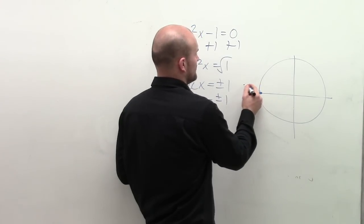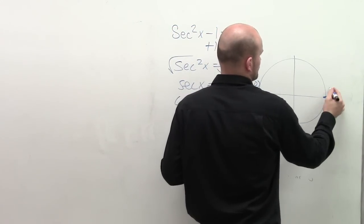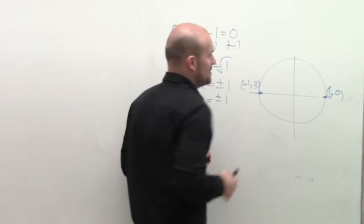We look at our unit circle, and we notice that we have these two points where our x-value is -1 and +1.